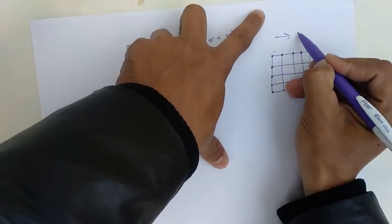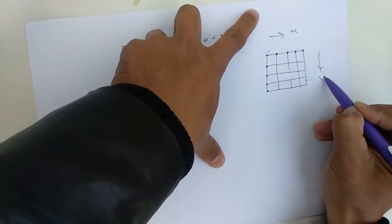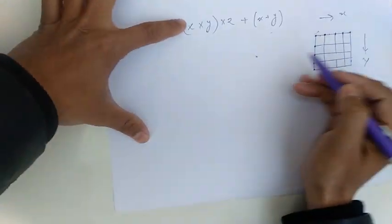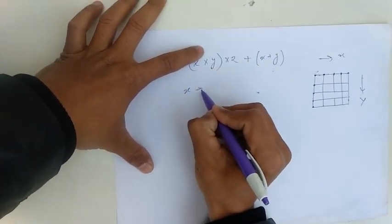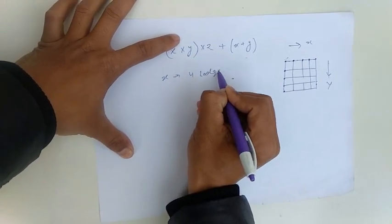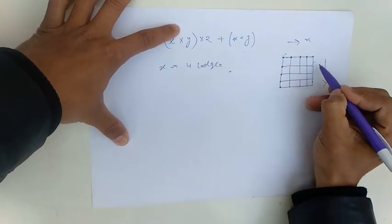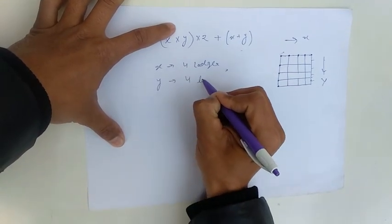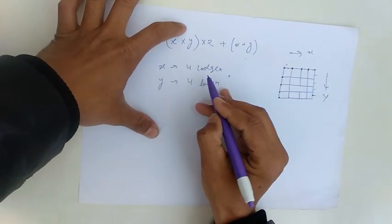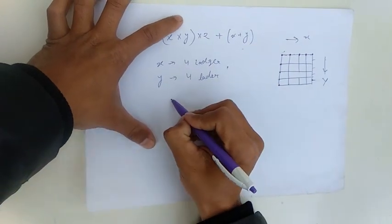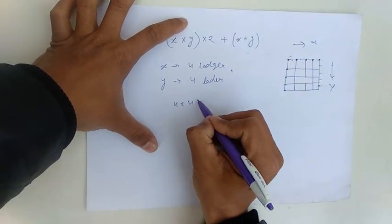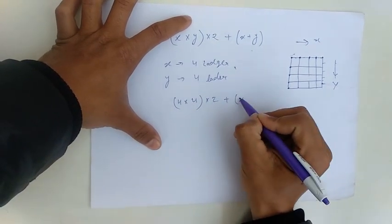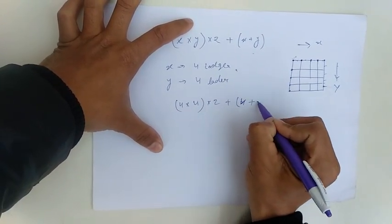This is the x direction, this is the y direction. In x direction we have one, two, three, four ledgers. In y direction we have one, two, three, four ledgers. And the formula was x direction 4 ledgers, y direction 4 ledgers into 2 plus 4 plus 4.